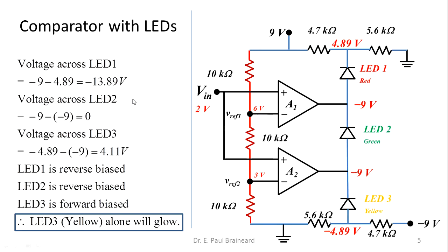The voltage across LED1 is reverse biasing, so the red LED (LED1) is turned off. LED2 is also turned off with 0V across it. The voltage across LED3 is +4.11 volts, which forward biases the device. Therefore, the yellow LED (LED3) will glow. For an input voltage of 2 volts, only the yellow colored LED glows.